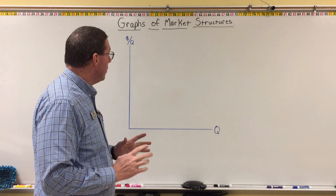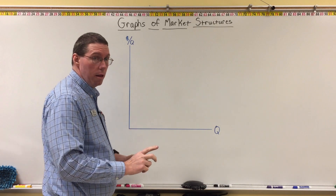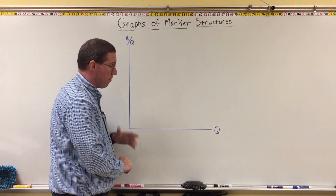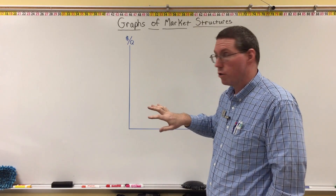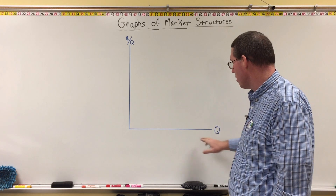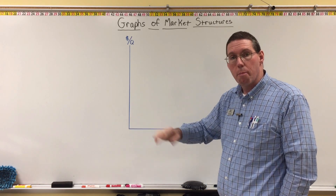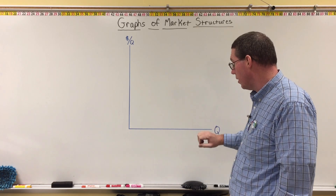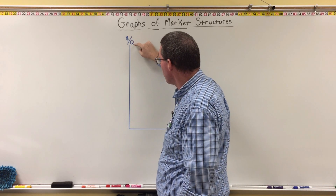The next thing you need to understand in order to understand the graphs of market structures is the scale and units of the coordinate plane we're going to use. The good news is we're only going to be using the positive portion — quadrant 1. The horizontal axis is the quantity axis, representing the quantity produced by suppliers or purchased by demanders. This is basically equivalent to a supply and demand graph, only instead of putting price on the vertical axis, we're putting dollars per quantity.